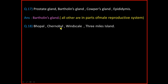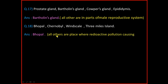Question Number 18: Bhopal, Chernobyl, Windscale, Three Mile Island. And the answer is Bhopal. The reason is all others are places where radioactive pollution-causing accidents had taken place.